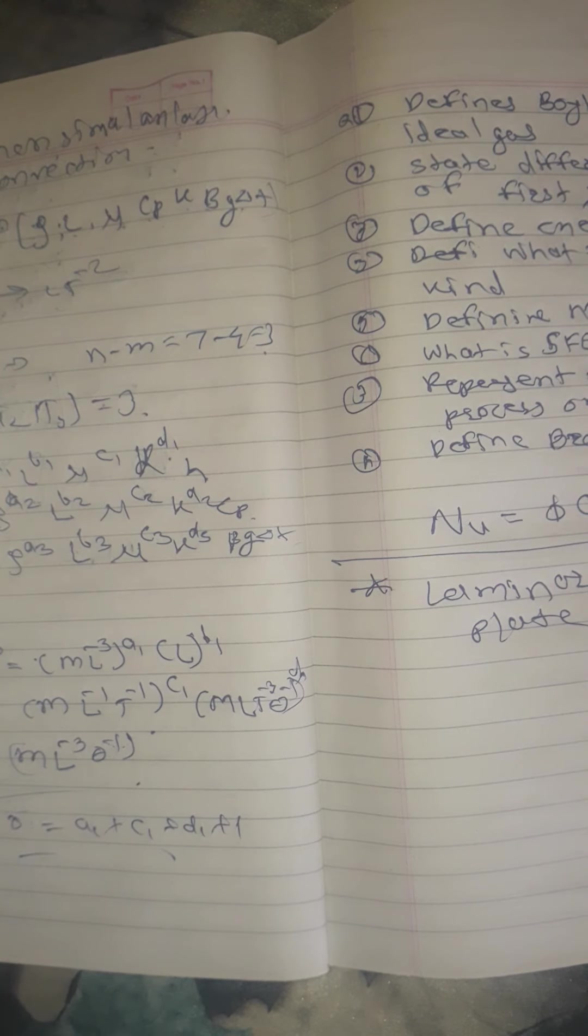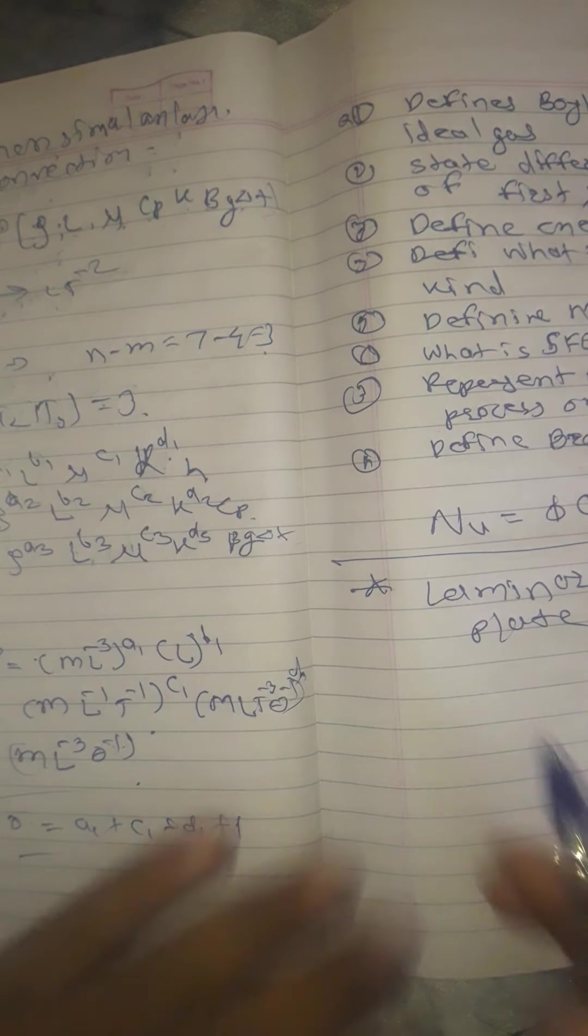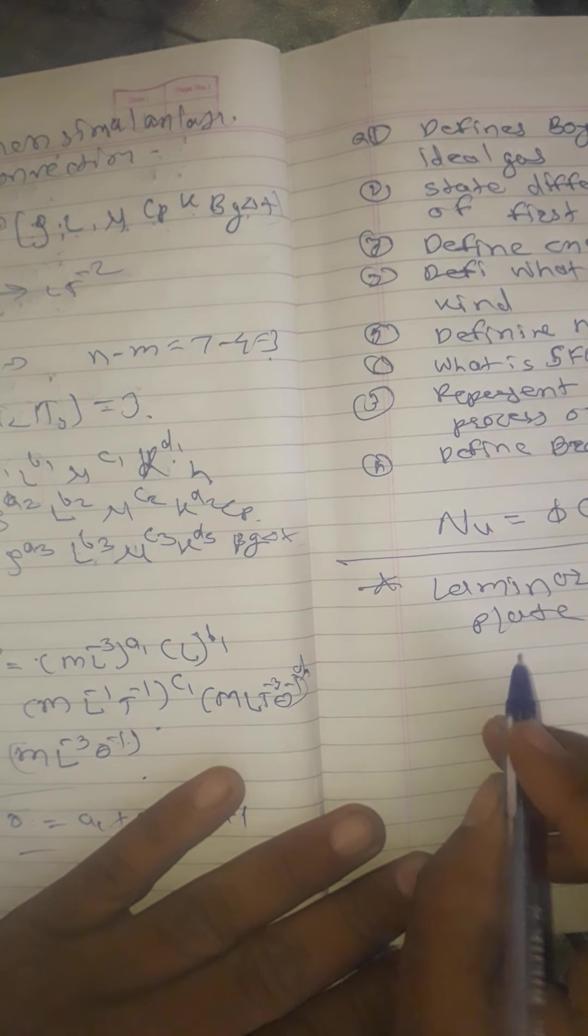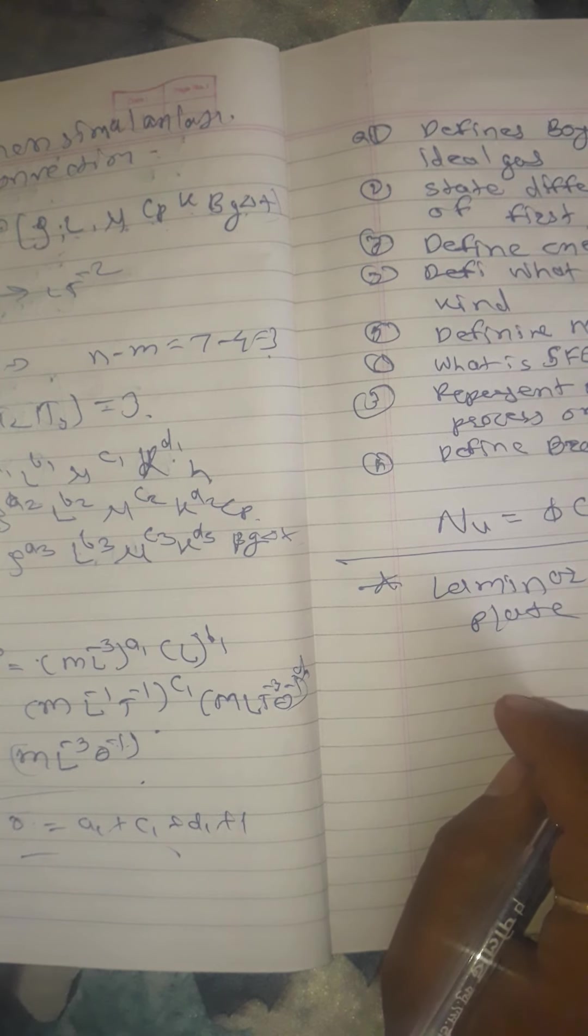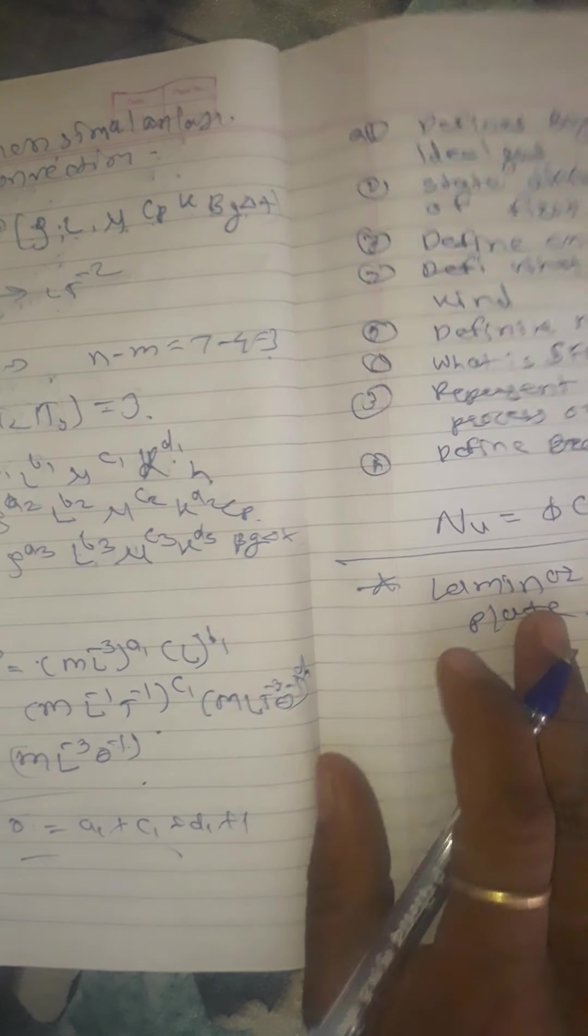Boundary layer is formed whenever there is a relative motion between the boundary and the fluid. Since tau 0 equals mu du by dy, the fluid exerts a shear stress on the boundary and boundary exerts an equal and opposite force on fluid known as shear resistance. According to boundary layer theory, extensive fluid medium around bodies moving in a fluid can be divided into following two parts.